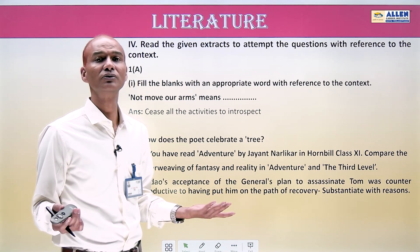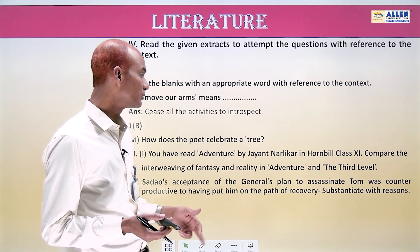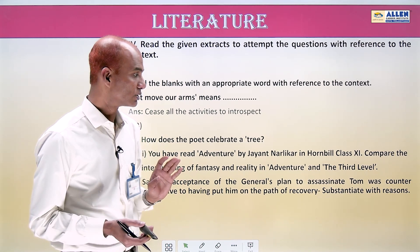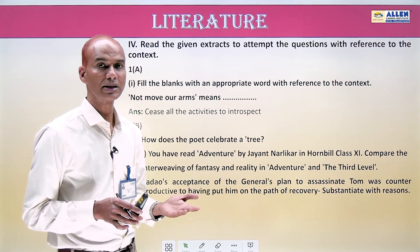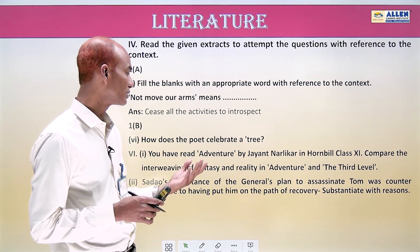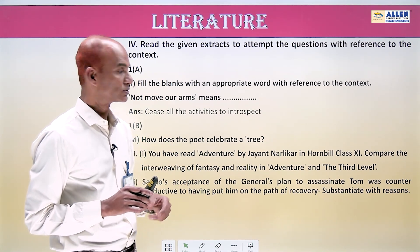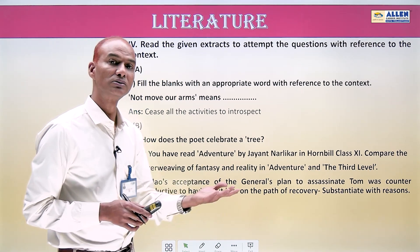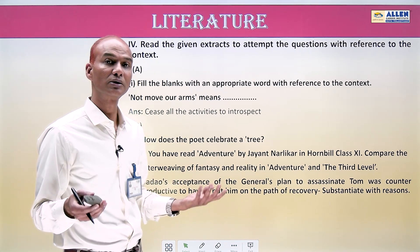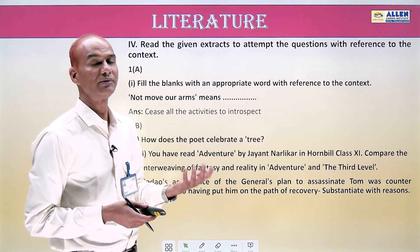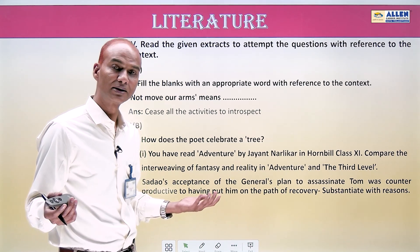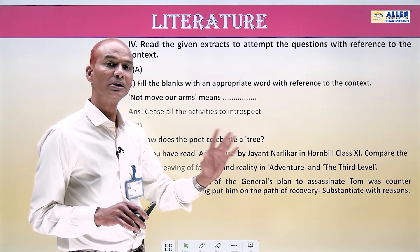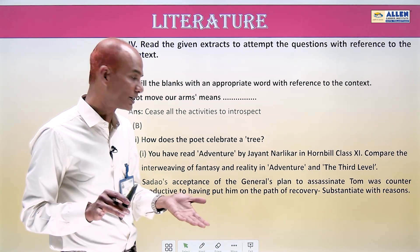Compare the interweaving of fantasy and reality in 'Adventure' and 'The Third Level.' If you haven't read 'Adventure,' use a trick: use the facts from 'The Third Level' to justify 'Adventure' as well. Just as Charlie in 'The Third Level' goes into the third level — a product of his fantasy — similarly in 'Adventure,' the protagonist enters the same land of fantasy. Like 'The Third Level,' 'Adventure' is a blend of both fantasy and reality; the protagonist lives in two worlds. This is how you balance your ignorance of the chapter intelligently.